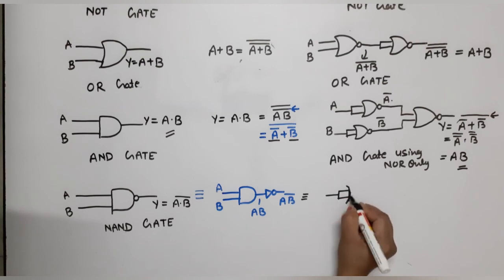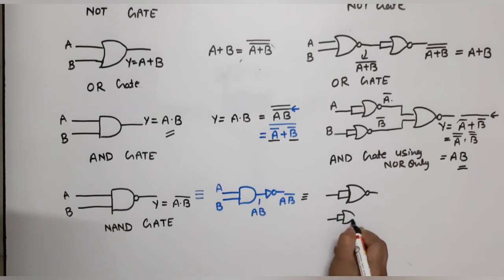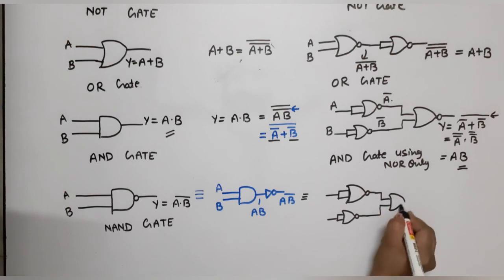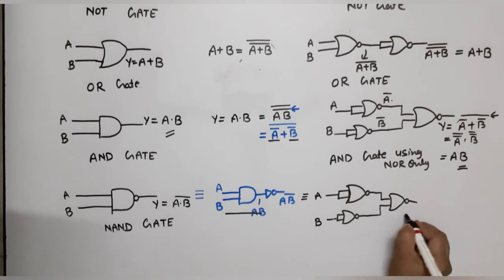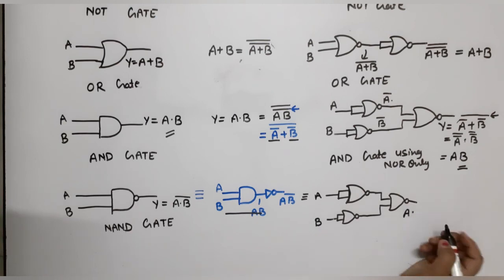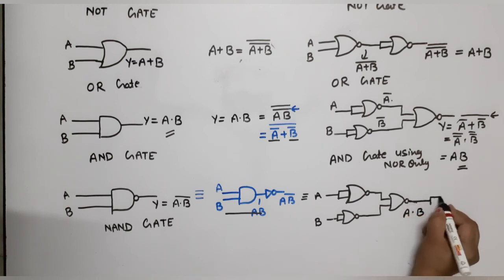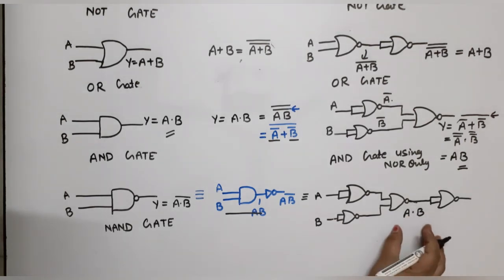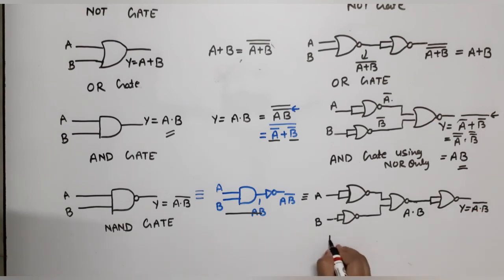To build AND gate we need three NOR gates. First NOR gate, second NOR gate, and third NOR gate — with inputs A and B, output is A dot B. Then apply this output to one more NOT gate using NOR. Final output Y is equal to A dot B bar. This is NAND gate using NOR only.